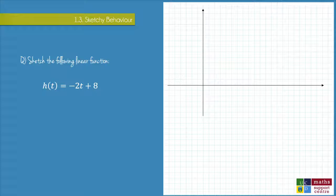The last thing I want to do in this video is run through how we sketch a linear function when we're given the equation itself. So here I have h(t) is equal to -2t + 8.